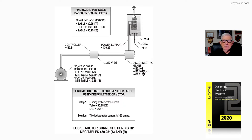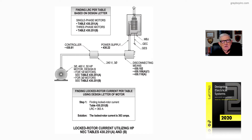To do this, we would have to go to page 10 in the NEC, look at section 430.7A9, and it gives the permission there to use the design letters if we wish to do so, and it would work out in our design to start the motor and accelerate the load. And we would go to table 430.251 on page 334 of the code.